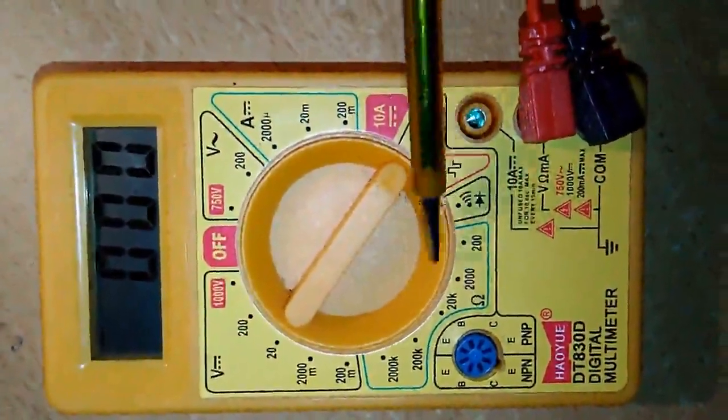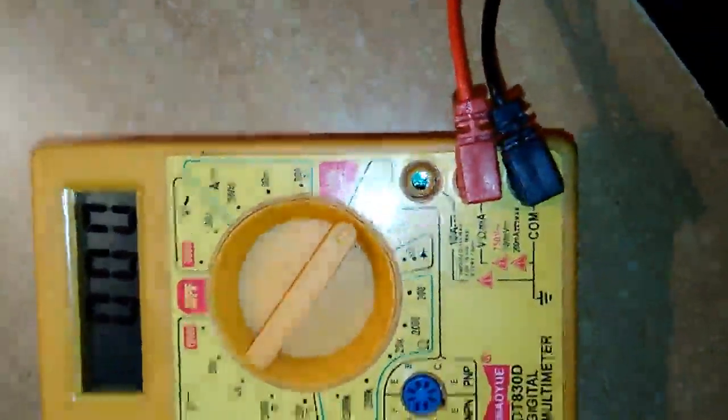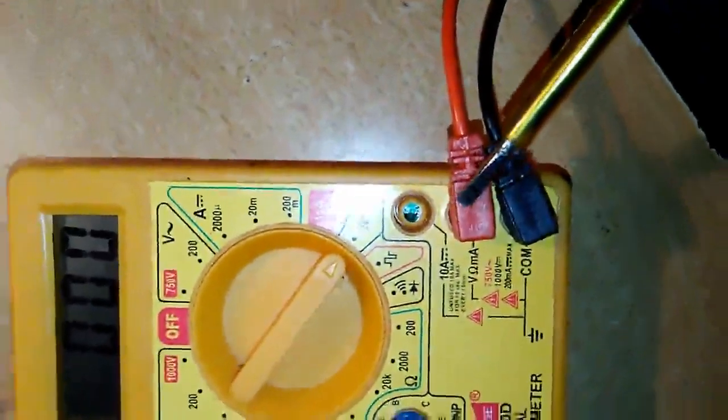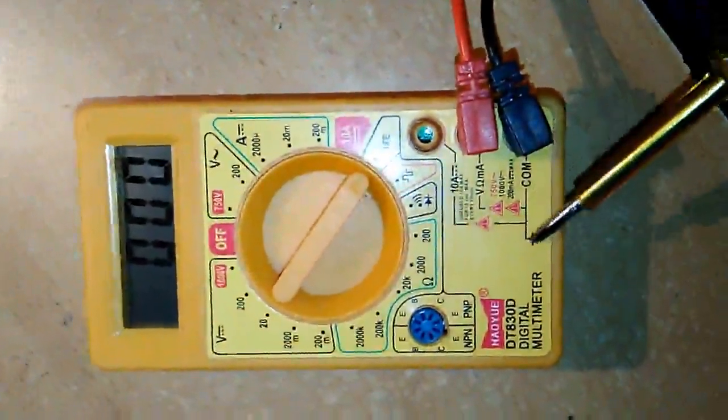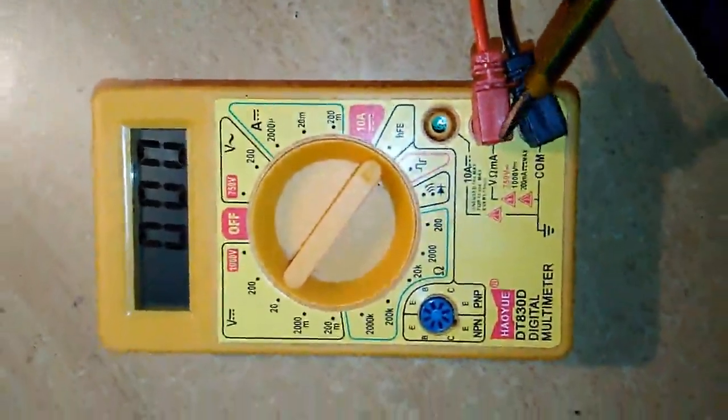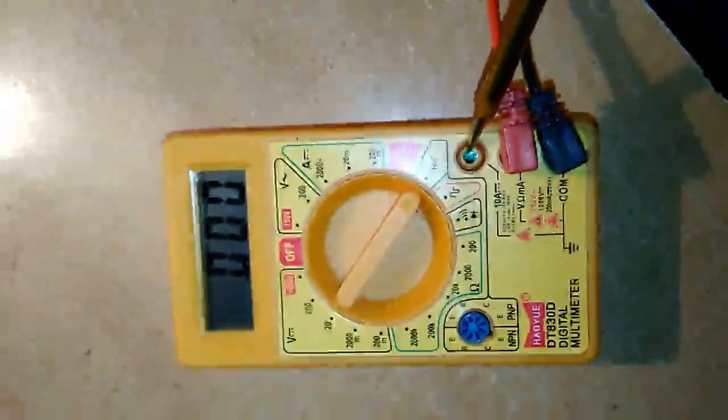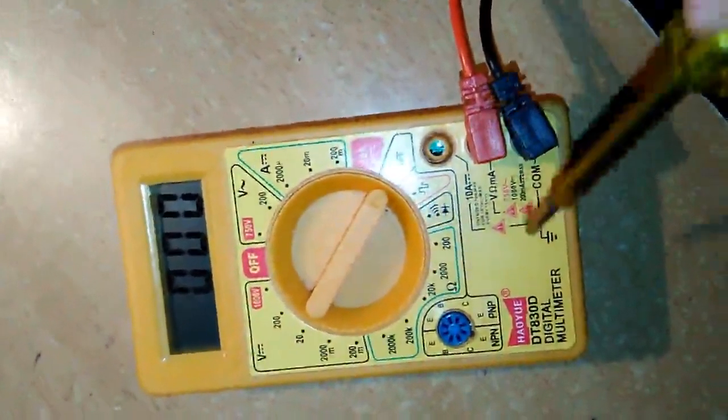Here we can measure the resistor value given in ohms. These are two probes, negative and positive. This negative is common to all, connected to ground. This is red, we can shift here for measurement of current in amps, and here for measurement of voltage.